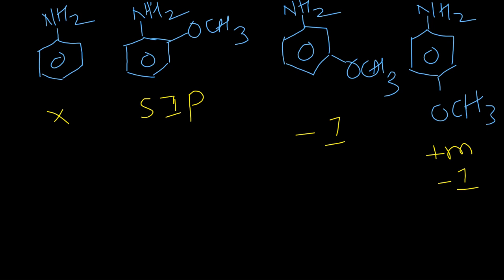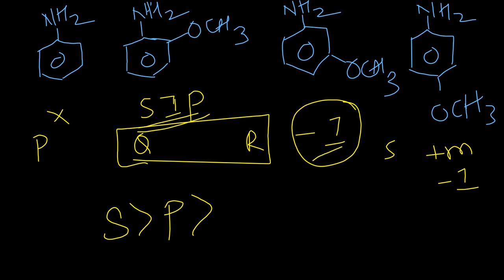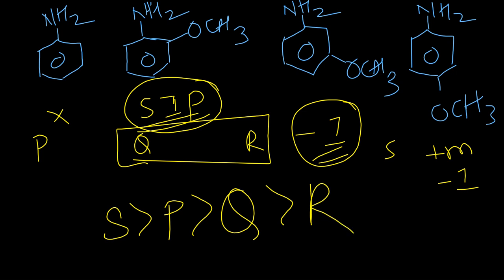The most basic should be S (para-methoxy aniline). Then due to electron withdrawal, P (meta) is next. SIP decreases basic strength greatly, so Q and R follow. Interestingly, Q (ortho-methoxy) comes before R (tolidine) because plus M, minus I, and hydrogen bonding together with SIP place it third. This is a data-based result.